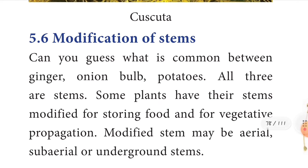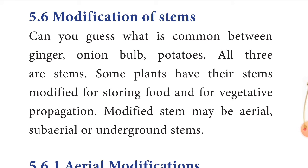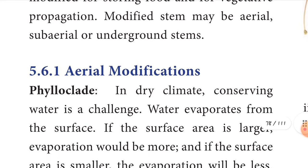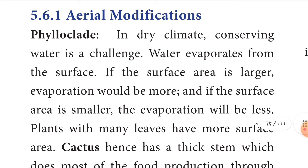Next we are going to learn modification of stem. Can you guess what is common between ginger, onion bulb, and potatoes? They are all stems, not roots. Some plants have their stems modified for storing food and for vegetative propagation. The modified stem may be aerial, sub-aerial, or underground.